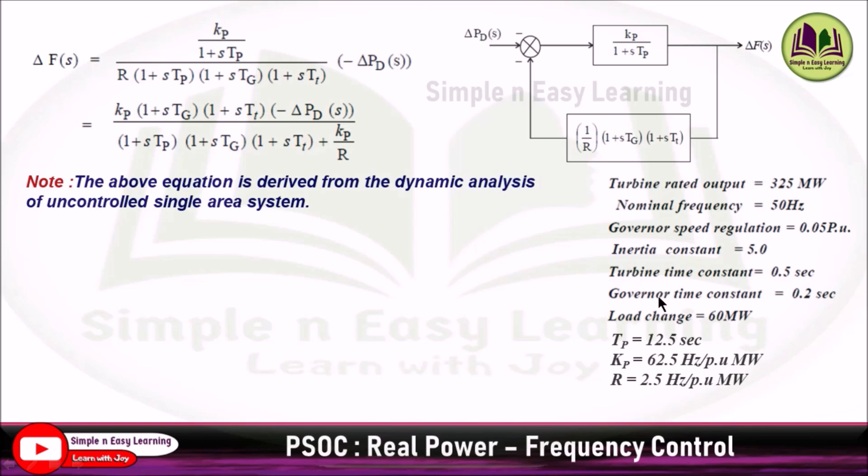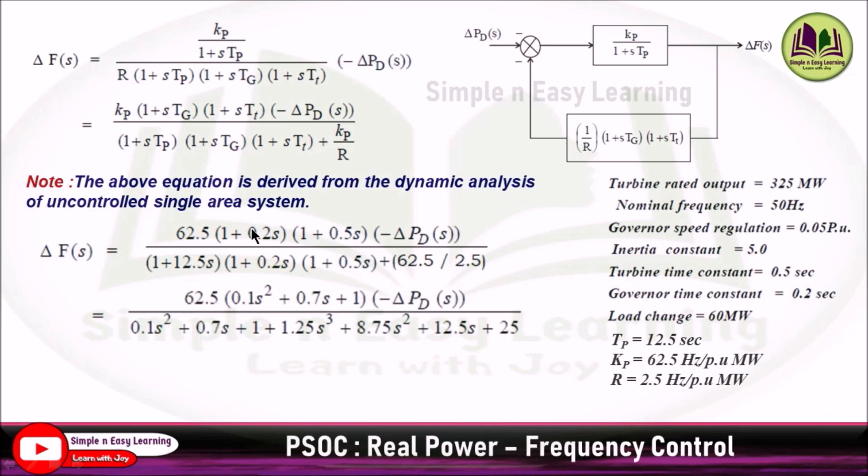Substituting all the values from the given data: Δf(s) equals Kp value 62.5, (1+s times Tg 0.2)(1+s times Tt) minus ΔPd(s), divided by (1+sTp)(1+sTg)(1+sTt) plus Kp/R. Multiplying these terms gives a quadratic function. In the numerator, 62.5, and taking 0.1 out, you get s² + 7s + 10.